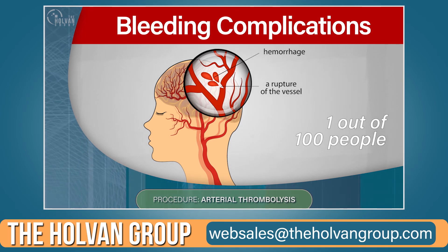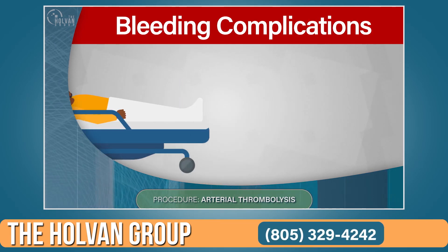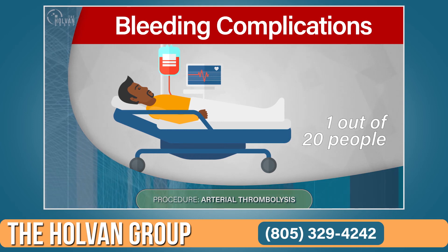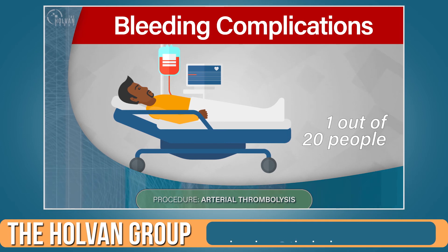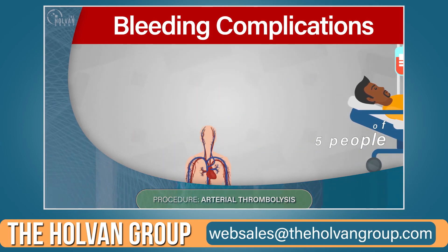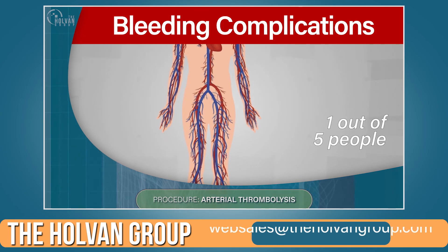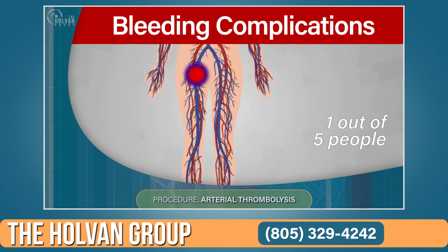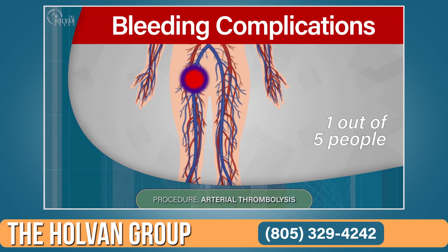After getting a clot-dissolving medication, about one out of every 100 people will have bleeding in their brain. About one out of every 20 people will have a major bleeding complication, which will drop their blood pressure and possibly require a blood transfusion. About one out of every five people will have minor bleeding — usually oozing of blood around the tube that goes into the groin — which can leave a bruise.